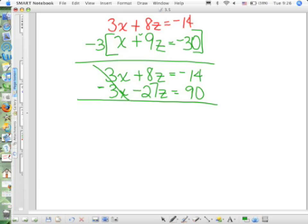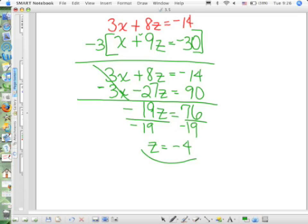I've got negative 19z equals positive 76. Finally, we're seeing a light. Divide both sides by negative 19. z equals negative 4. All right, I have found z.